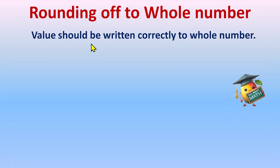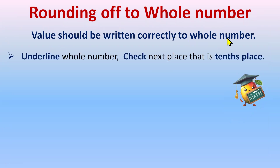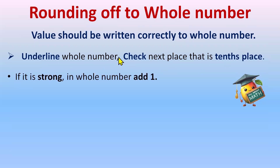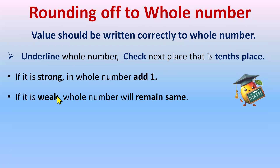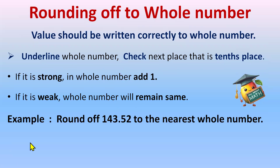When rounding off to a whole number, the value should be written correctly with no decimal part in the solution. The steps are: underline the whole number and check the next place, which is the tenths place. If the tenths place is strong — meaning five to nine — add one to the whole number. If the tenths place is weak, the whole number remains the same.